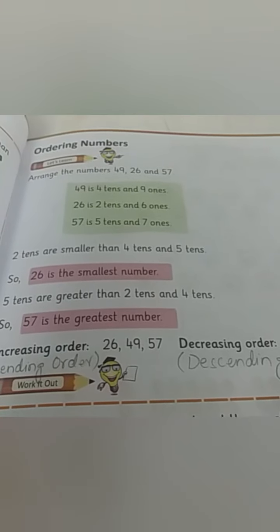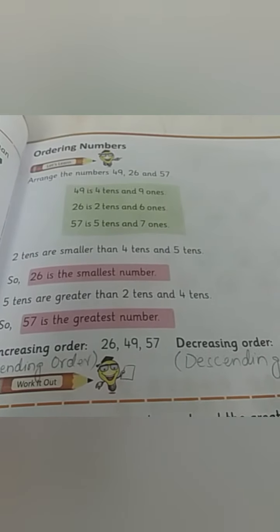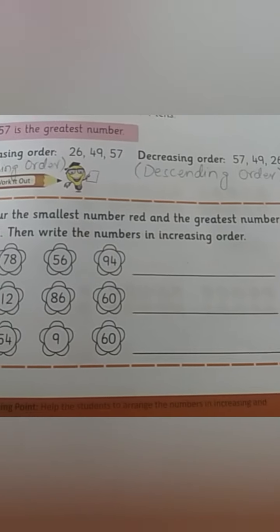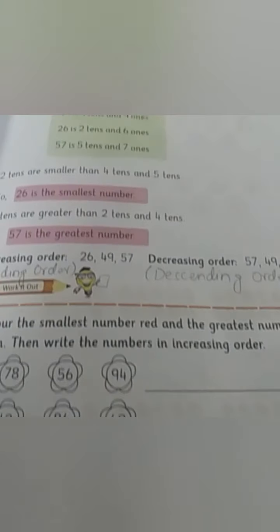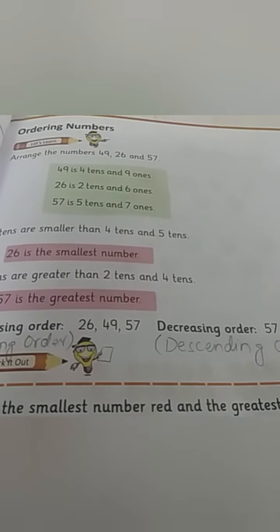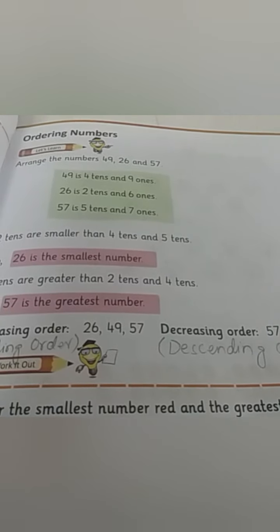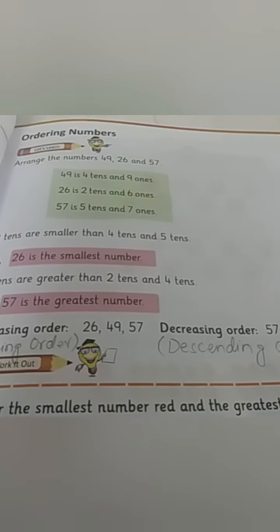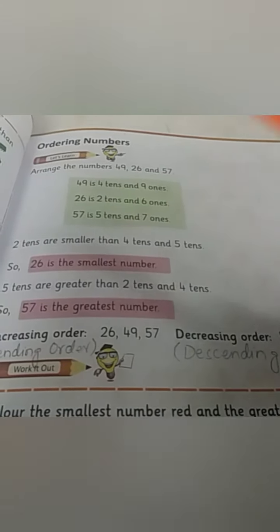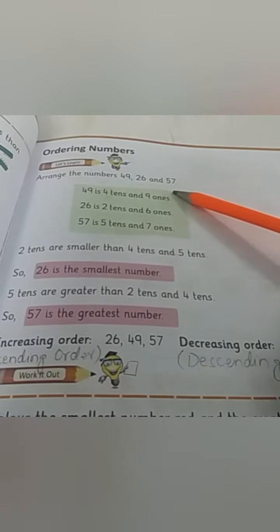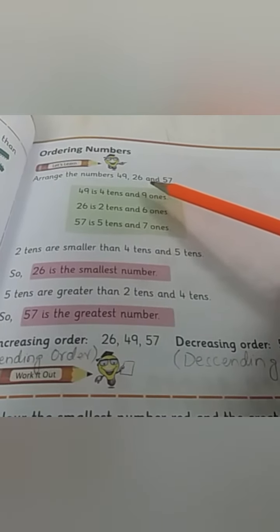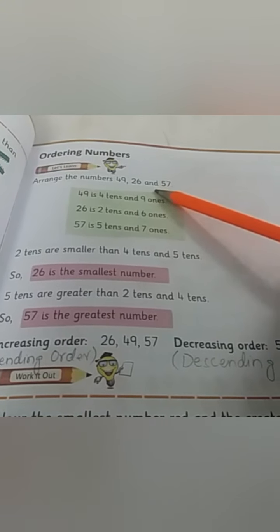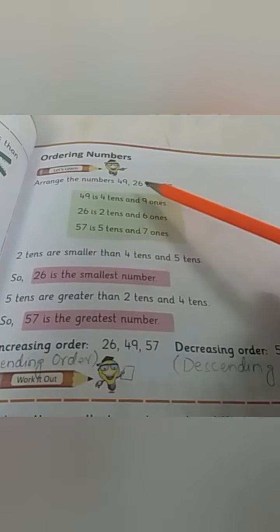Bismillahirrahmanirrahim and Assalamu Alaykum. Today our topic is ordering numbers, which is present in your books on page number 25. Now how do we arrange numbers in an order? Let's see. We have three numbers over here: 49, 26, and 57.